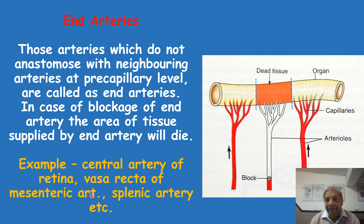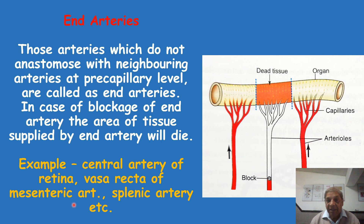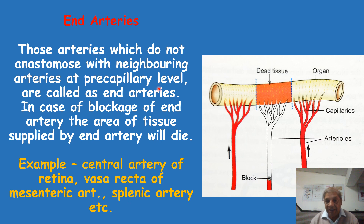Similarly, the vasa recta of the mesenteric artery — arteries supplying the intestine — in the mesentery, which is the double fold of peritoneum hanging the intestine, they form long arterioles called vasa recta. Between the vasa recta there is absence of pre-capillary anastomosis, so if these arterioles are blocked, the intestine will also die — that part of the tissue in that region will die. Similarly, the spleen and parts of the kidney also have end arteries.